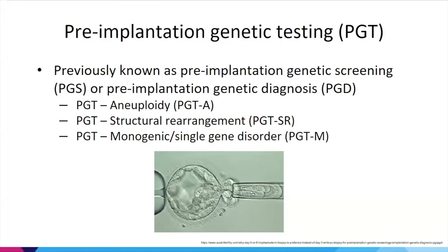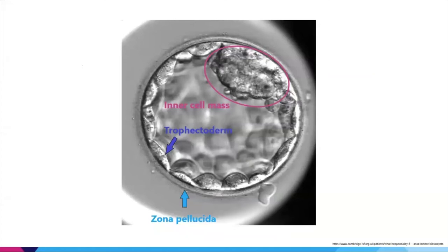The primary purpose of PGT-A is to improve IVF transfer outcomes by reducing the chance that an aneuploid embryo is transferred, thereby increasing implantation rates, pregnancy rates, and live birth rates while reducing miscarriages. To do this, the embryo is biopsied — typically four to ten cells. Those cells come from the trophectoderm, which will eventually become the support structures of the pregnancy, such as the placenta. The inner cell mass will develop into the fetus.